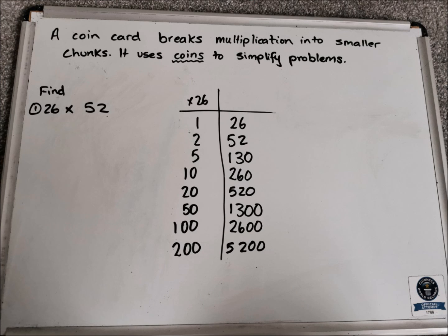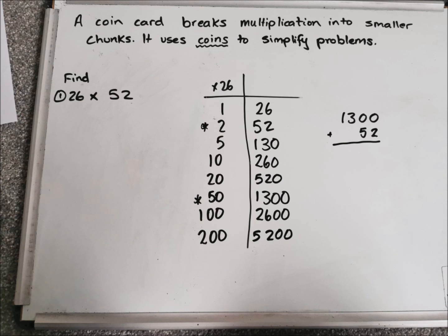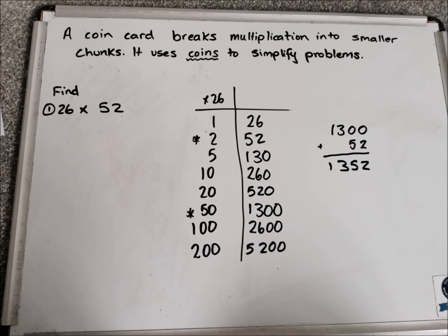That is how we have completed our coin card. Pause the video and go back if anything was confusing for you. Now we're going to look at examples of questions that we can use this coin card to answer. For example, find the answer to 26 times 52. We need to work out how to make 52, so we would use 50 and 2. Adding 1,300 and 52 gives us 1,352. So 26 multiplied by 52 is 1,352.